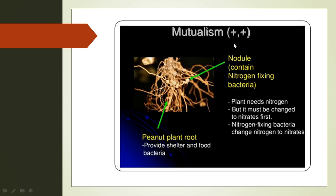Another example of mutualism is nitrogen-fixing bacteria living in root nodules of legume plants. The nitrogen-fixing bacteria fix nitrogen, convert it to nitrates, and make it available for the plants. In return, the plant provides shelter and food to the bacteria.